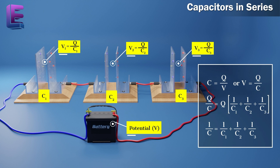In the series connection, the equivalent capacitance satisfies: 1/C is equal to 1/C1 plus 1/C2 plus 1/C3.